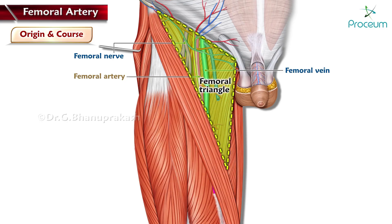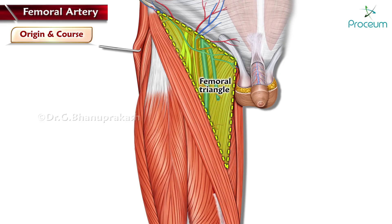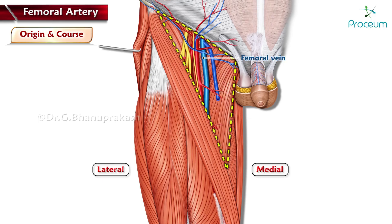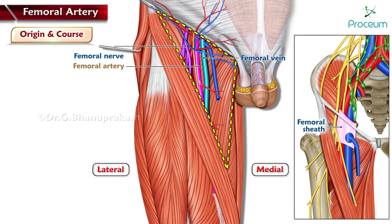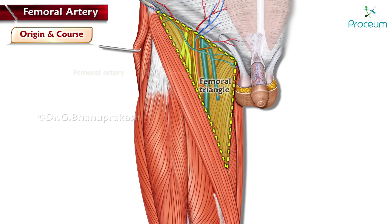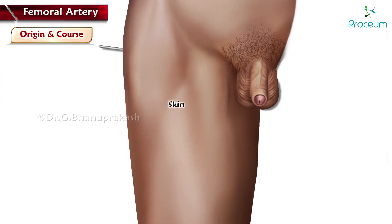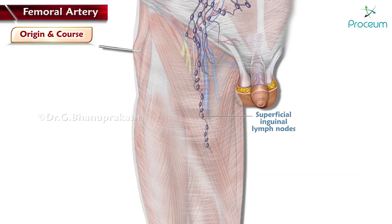Just inferior to the inguinal ligament within the femoral triangle, the anatomical relationship from medial to lateral is: femoral vein, common femoral artery, and femoral nerve. The artery and vein are both contained within the femoral sheath, while the nerve is not. Within the femoral triangle, the femoral artery is located deep to the following structures: skin, superficial fascia, superficial